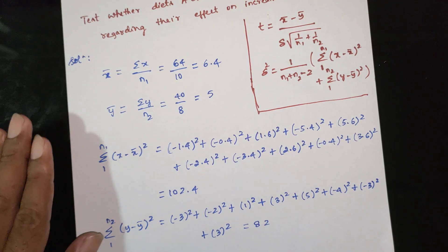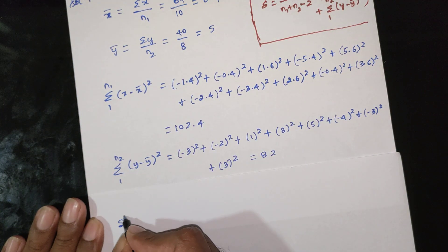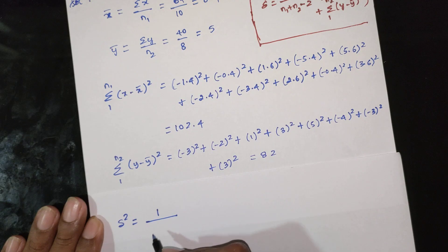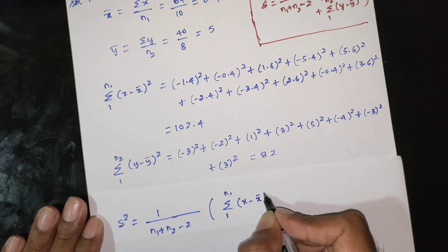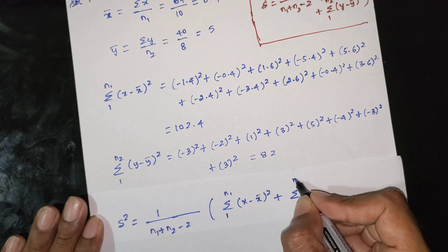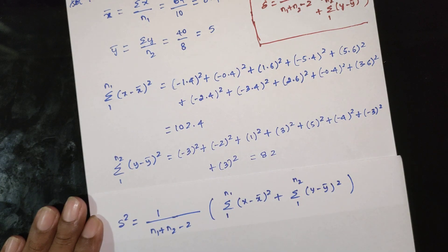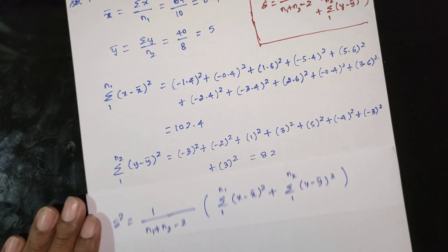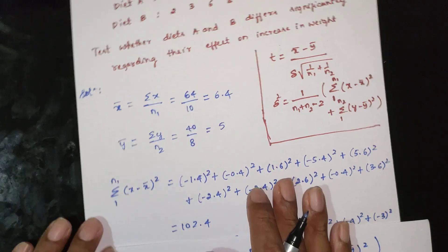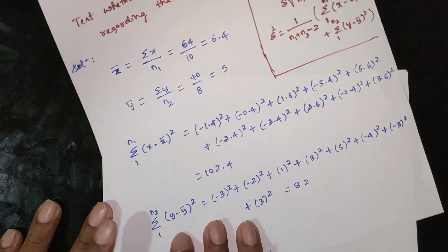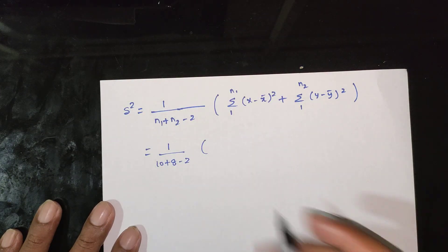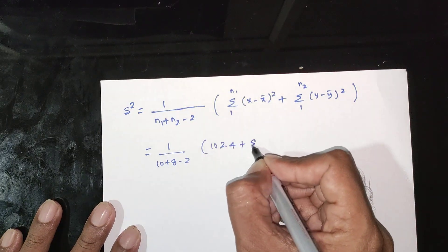Now find S-squared using the formula: 1 divided by (n1 + n2 − 2), multiplied by [Σ(x − x̄)² + Σ(y − ȳ)²]. Here n1 = 10, n2 = 8, so (10 + 8 − 2) = 16. S-squared equals (102.4 + 82) divided by 16, which gives 11.525.